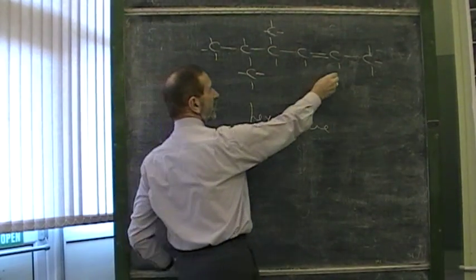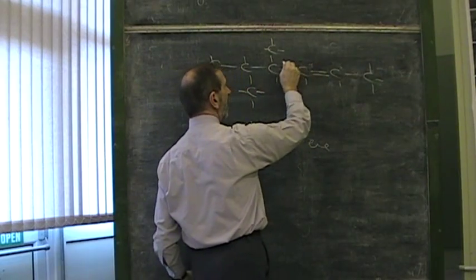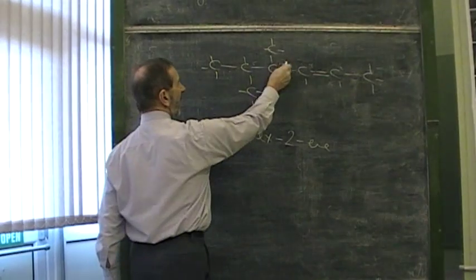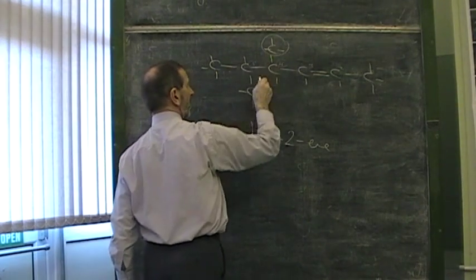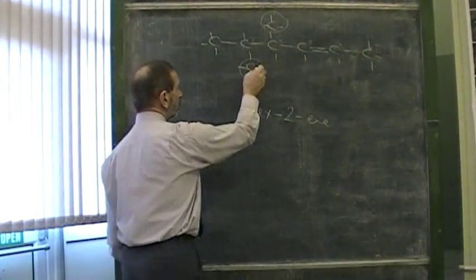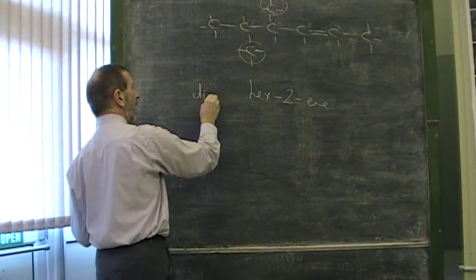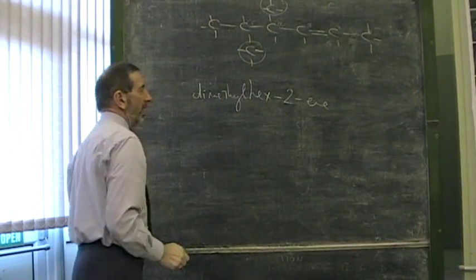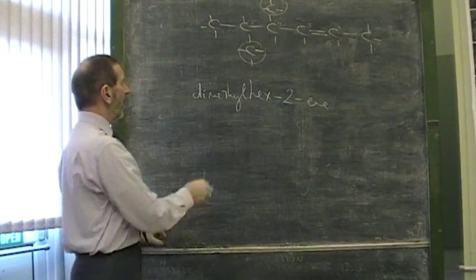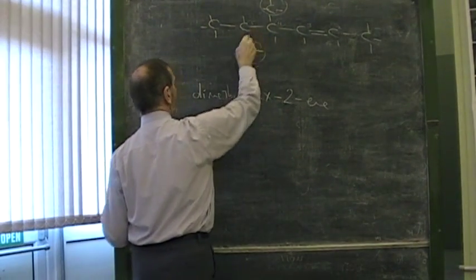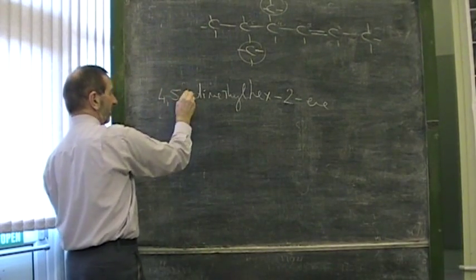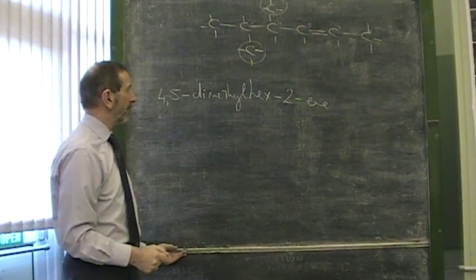So hex-2-ene describes the main chain. So if we decide that this is carbon number two, that must be three, that must be four, and that must be five. So we'll introduce numbers four and five to show where these branches are. Now we've got two of these branches, a simple little branch. It's called methyl. There are two of them, so we'll call them dimethyl. This is 4,5-dimethylhex-2-ene. There we have it.